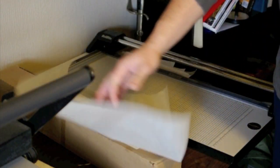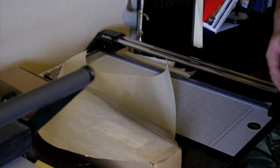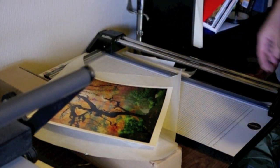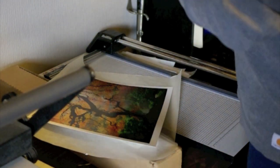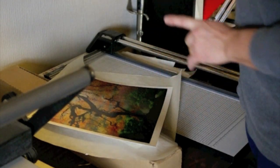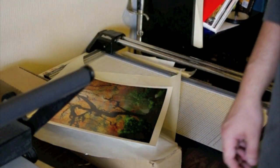So, now we have a piece of dry-mount tissue that's going to cover our photograph. And you see it's a little bit bigger. We're going to trim that down. So, now we're going to move into the other room to tack that dry-mount tissue to our photograph. So, that will be the next step.